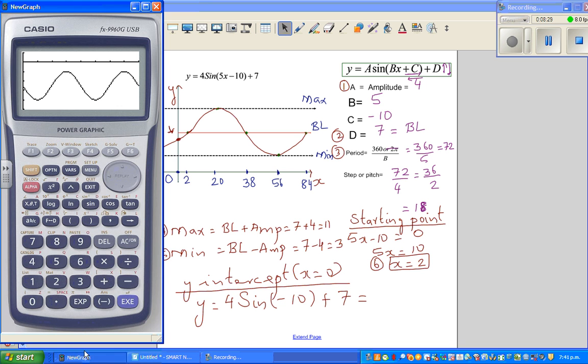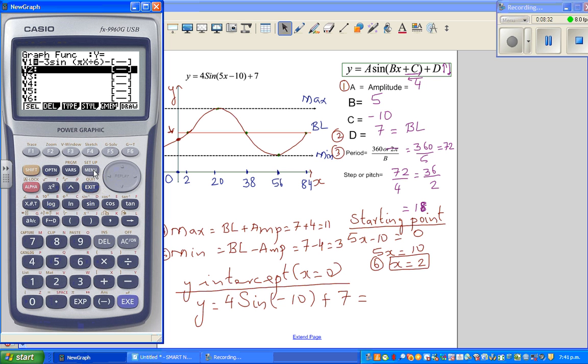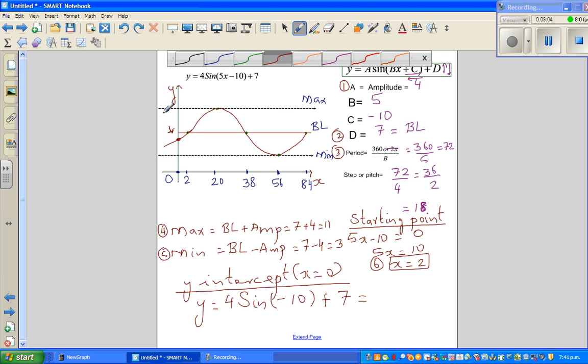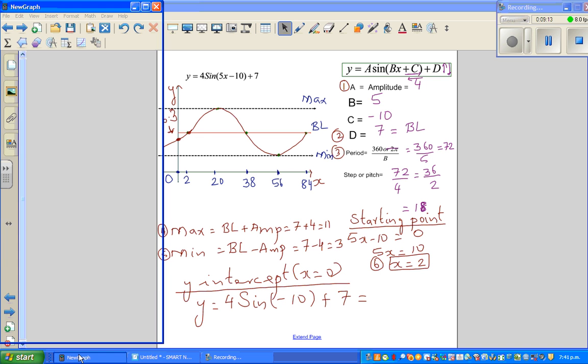So let me get a calculator. If we are working in degrees, the first thing we need to check is whether it's in degrees. It's not in degrees, so change it into degrees. Always check, even in exams, what is the setting. Here we are working in degrees. So I want to find 4 sine of minus 10 plus 7. What's that value? That's 6.3. It does make sense. I'm rounding to one decimal place. So this is 6.3. So your y-intercept is 6.3.